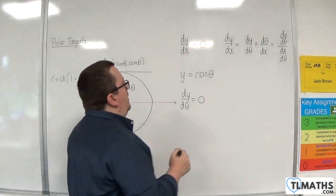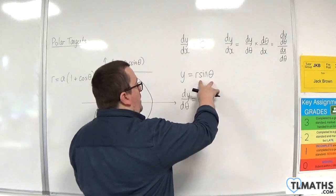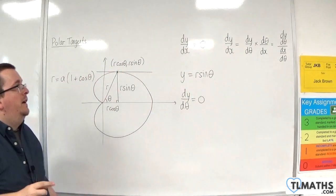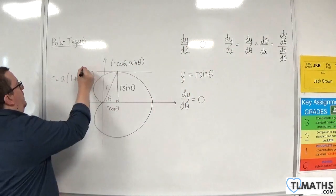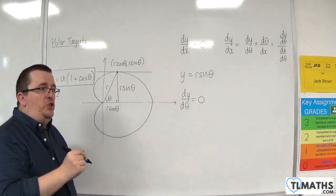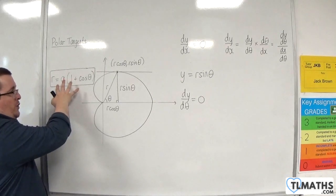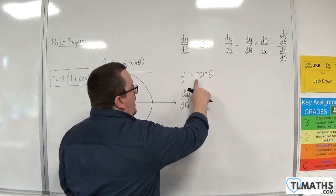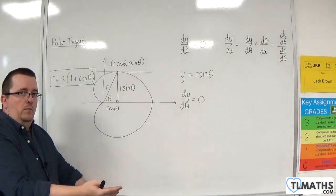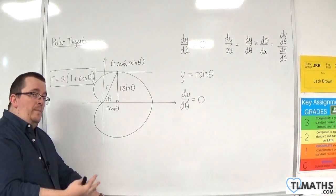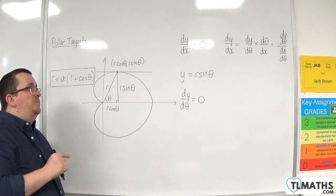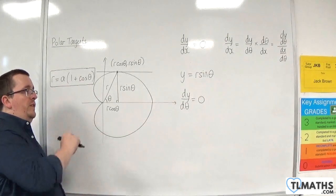Now y is equal to r sine theta. So we need to differentiate this with respect to theta. But we know what r is. It's this. So we'll be able to substitute our equation into here to replace out the r, differentiate, put it equal to 0, and solve. And we'll be using that method to find the equations of the tangents parallel to the initial line.